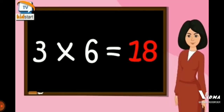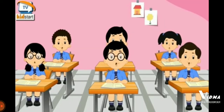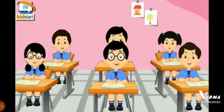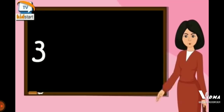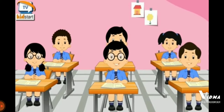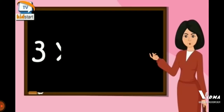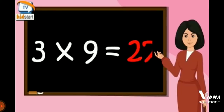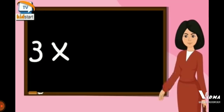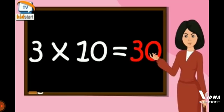Three sixes are eighteen. Three sevens are twenty-one. Three eights are twenty-four. Three nines are twenty-four. Three tens are thirty.